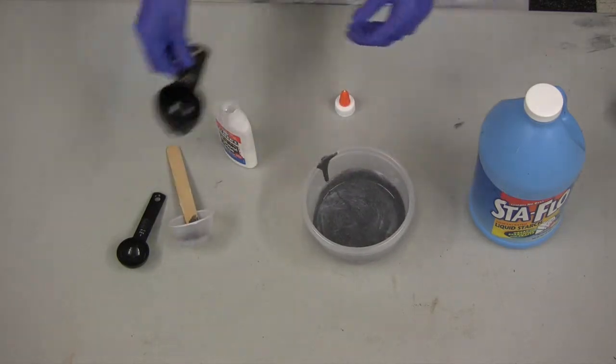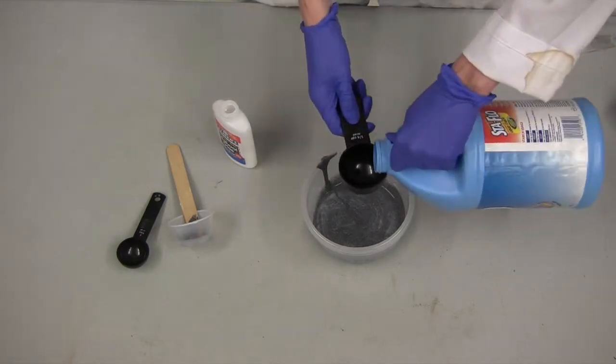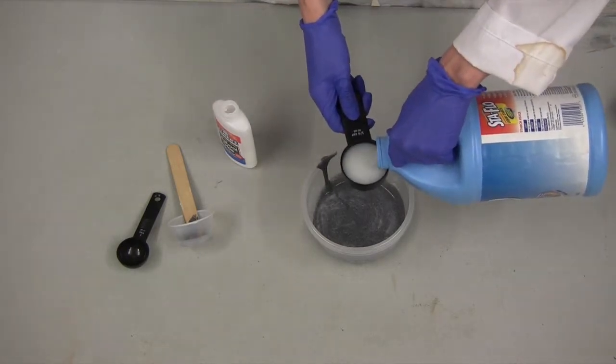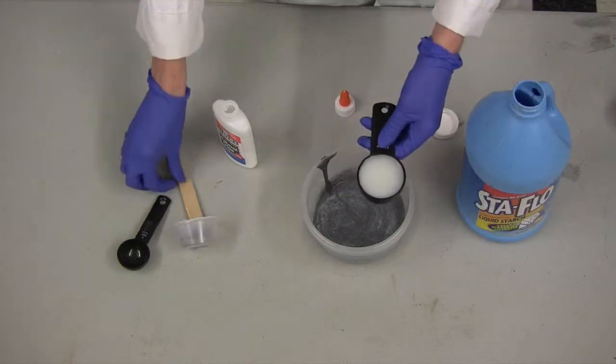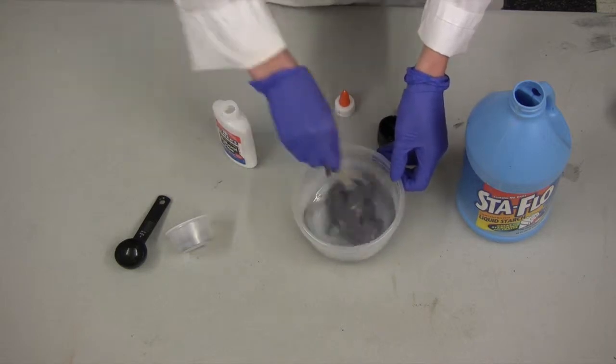Your glue and iron oxide mixture should look like that. Then we're going to add our liquid starch, and this is when you have to start stirring really quickly because once these two things start to mix, your polymer forms.